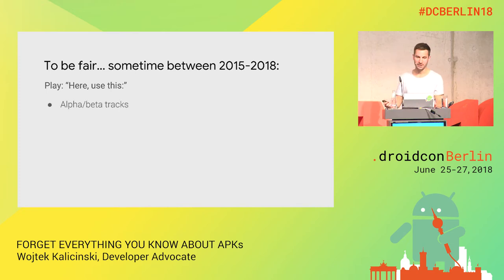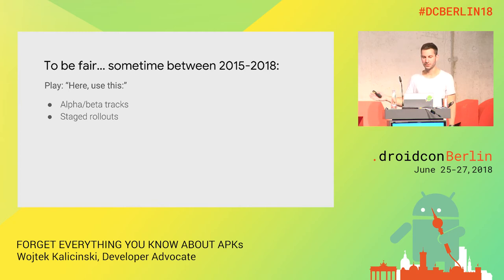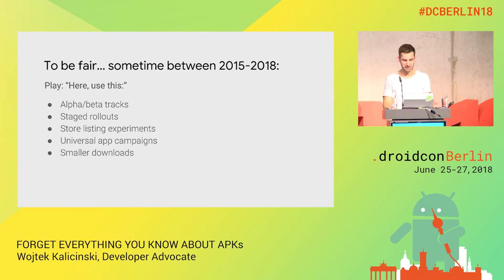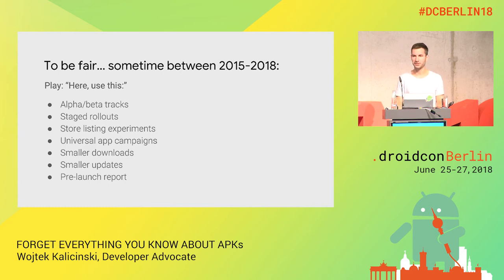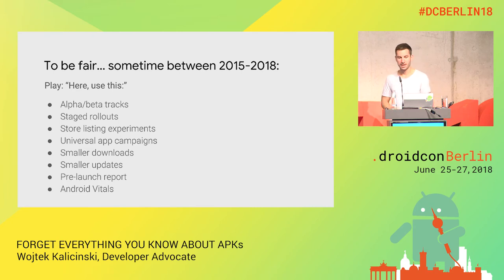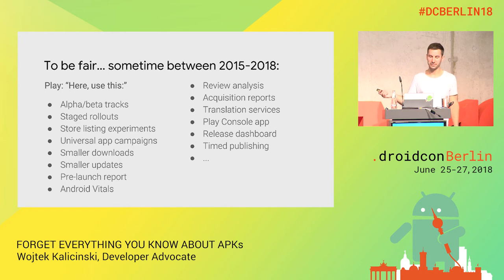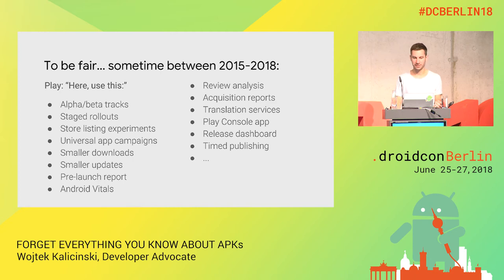Across the three years I worked at Google, we got alpha and beta tracks for testing releases with real users, staged rollouts, store listing experiments, universal app campaigns, smaller downloads, faster updates, prelaunch reports that test every APK you upload on alpha and beta tracks on multiple devices, and Android Vitals to figure out performance problems and bugs. So if you're not using those things, please do. The Play Store people were busy, and it turned out supporting splits was not an easy thing to implement — contrary to what I thought as a naive Noogler.